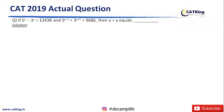Coming up to the next question: If 5 raised to power x minus 3 raised to power y is equal to 1, and the options are 3, 4, 3, 8. And 5 raised to power x minus 1 plus 3 raised to power y plus 1 is equal to 9, 6, 8, 6. Then the value of x plus y is?